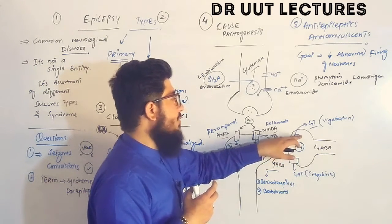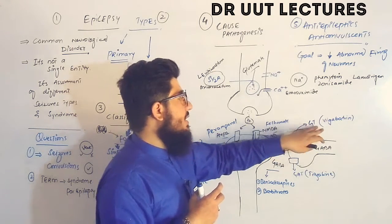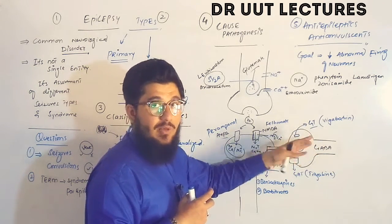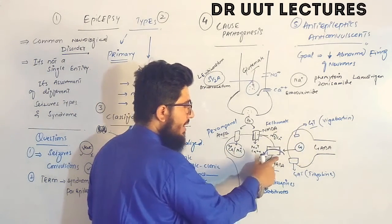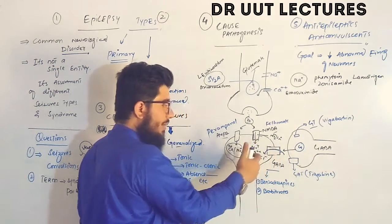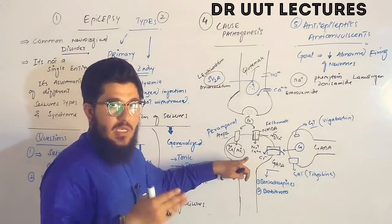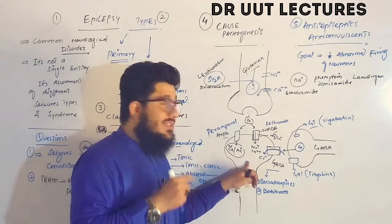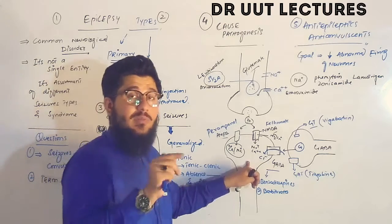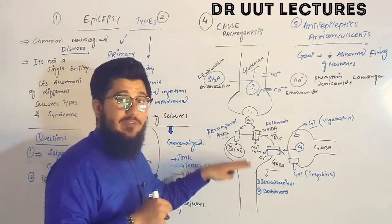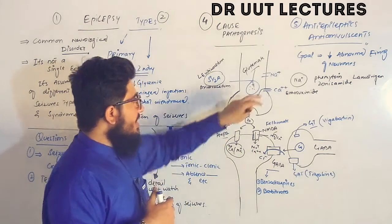We can also block the GABA transaminase enzyme, which prevents GABA from being metabolized — thereby increasing GABA concentration, stimulating GABA receptors, causing more chloride influx, and decreasing neuronal excitation. When the inside becomes negative, cells are inhibited. Drugs acting on sodium channels include phenytoin, zonisamide, and lamotrigine. For calcium channels, ethosuximide is used.